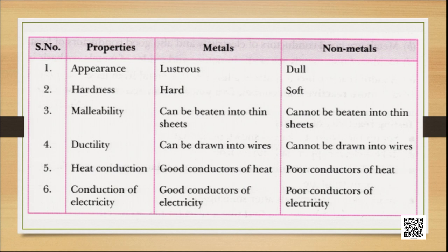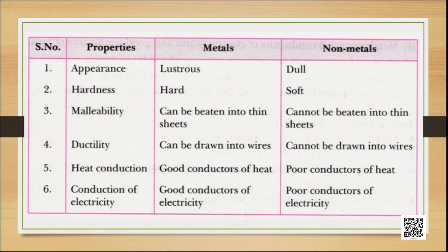Coming to the second property: hardness. Metals are generally hard — you cannot cut metals with simple cutting tools like a knife; you cannot cut iron with a knife. Non-metals are generally soft, like wood, which you can cut with a sharp knife. But again, exceptions exist. Certain metals are also very soft and can be cut with a knife — that is lithium, sodium, and potassium. Similarly, for non-metals, there is another exception.